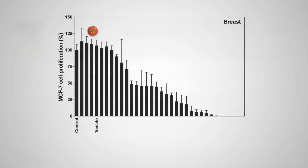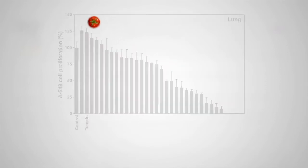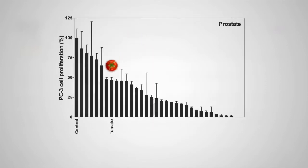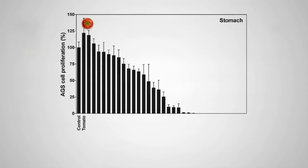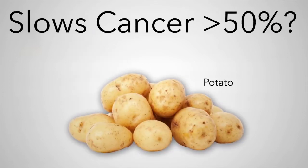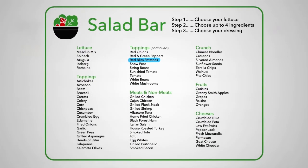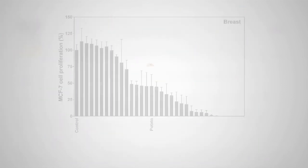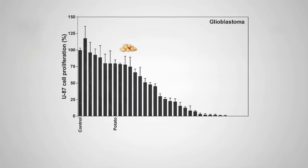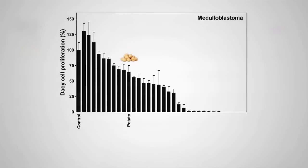Why am I gaining weight eating vegetables? Remember, substitution is the key. Fruits and vegetables are lower in calories than many other foods, but they do contain some calories. If you start eating fruit and vegetables in addition to what you usually eat, you are adding calories and may gain weight.